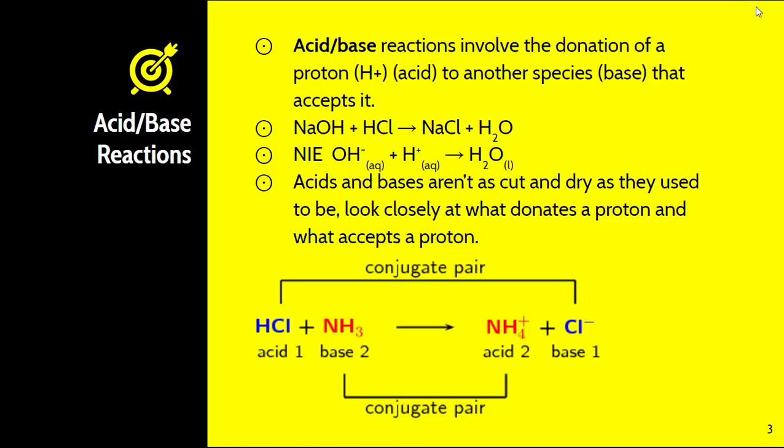Now acids and bases are not quite as cut and dry as they used to be so you need to look very closely at what donates a proton and what accepts a proton. We have HCl and NH3. Typically we think of bases as something that has a hydroxide on the end and that's not always the case. In this instance NH3 acts as our base because it accepts the proton from HCl. Thus HCl is our acid and NH3 is our base. We'll talk about conjugate acid conjugate bases a little bit later on.